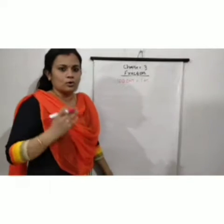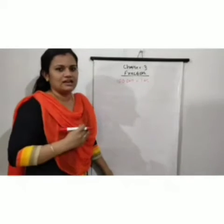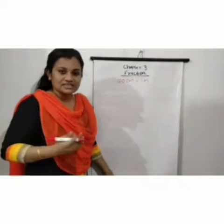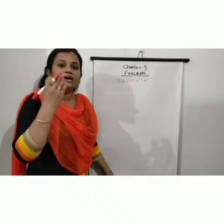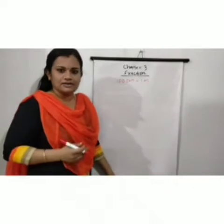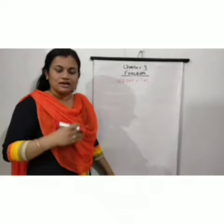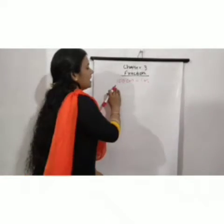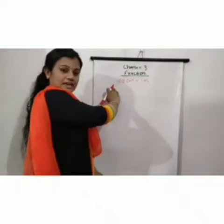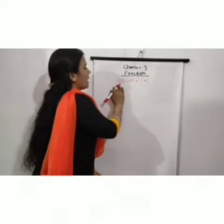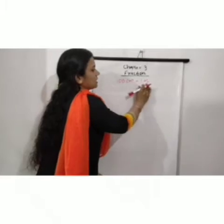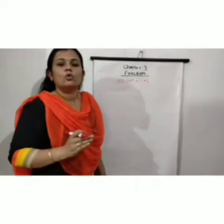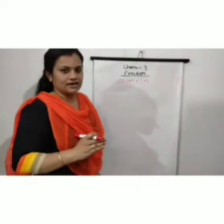We have a ruler. Ruler means scale. So a 15 centimeter ruler, a 30 centimeter ruler, and so on. Then we can write 100 centimeters equal to one meter.